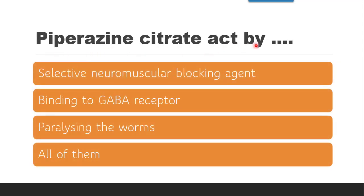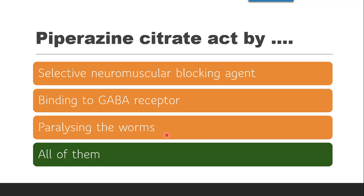Next question: Piperazine citrate acts by — whether they selectively block the neuromuscular agent, whether they bind to GABA receptor, whether they paralyze the worm, or all of them. The correct answer is all of them. According to the mechanism of action, they cause hyperpolarization along the nerve endings. They are a selective neuromuscular blocking agent in the parasite, which stops muscle movements and paralyzes the worms. Once paralyzed, worms are expelled into the stool through intestinal peristalsis. Piperazine citrate binds to the GABA receptor, which is inhibitory in nature, and is responsible for causing hyperpolarization.